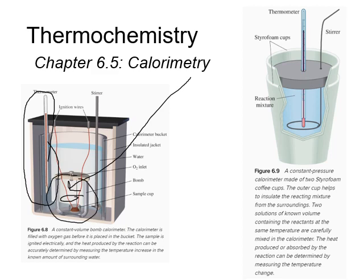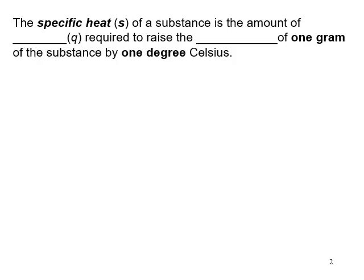A bomb calorimeter operates at constant volume. A constant pressure calorimeter — like a styrofoam cup calorimeter — has a reaction occurring in an aqueous solution, where water is the matrix. By knowing the change in temperature, you can determine how much energy the water absorbed, and from that, determine how much energy the chemical reaction absorbed or lost.